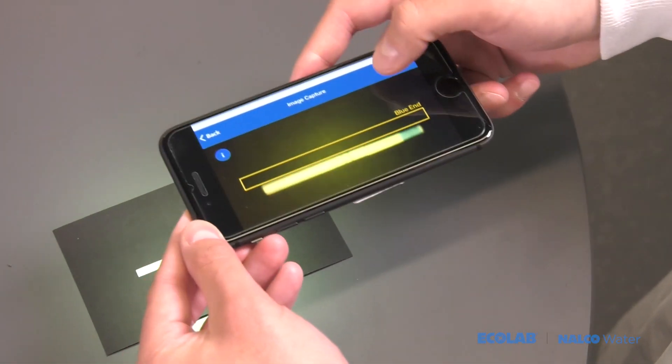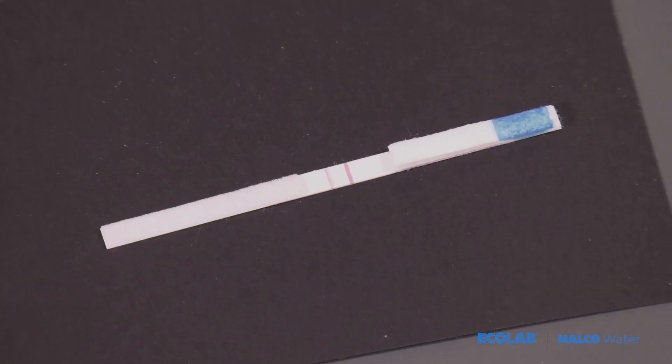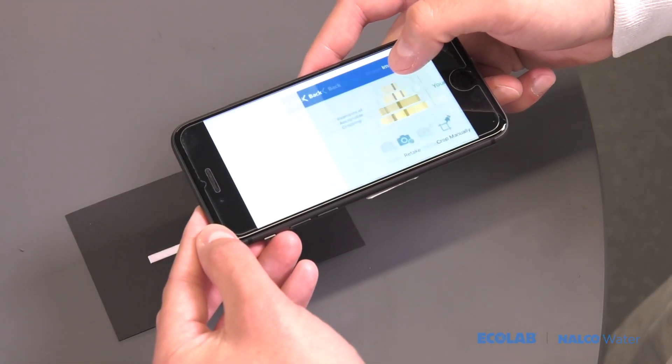Position the smart device above the test strip. Align the test strip within the display window box with the blue side of the strip facing right.